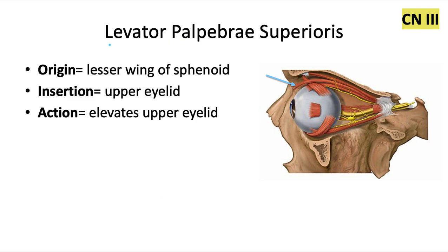The levator palpebrae superioris elevates the upper eyelid. It originates from the lesser wing of the sphenoid bone and inserts into the upper eyelid. It is innervated by cranial nerve 3.